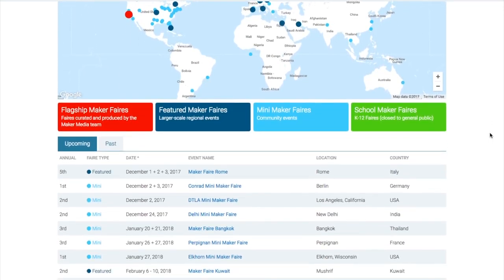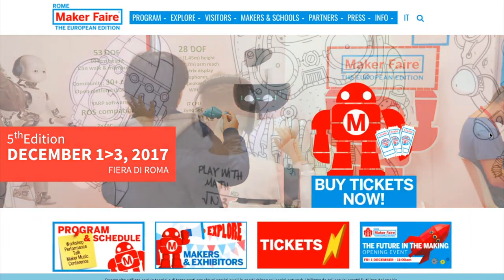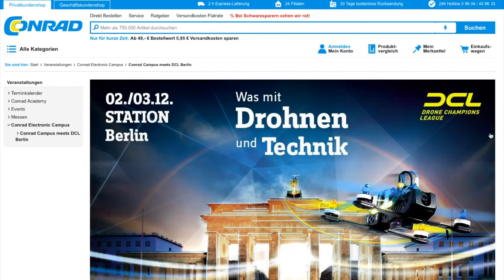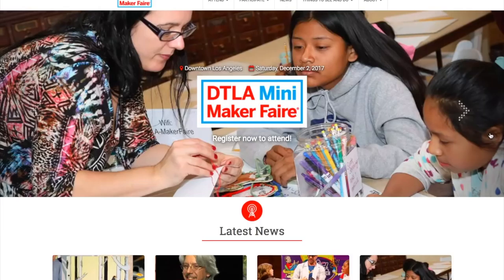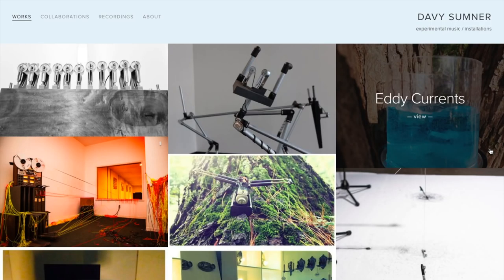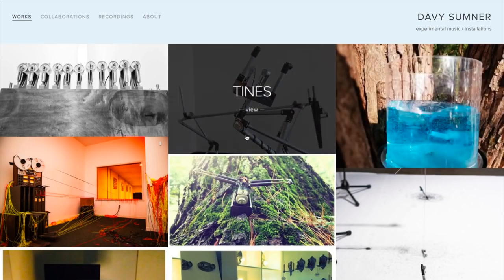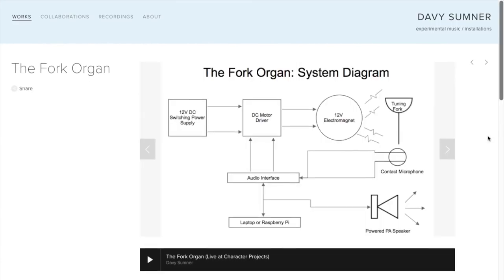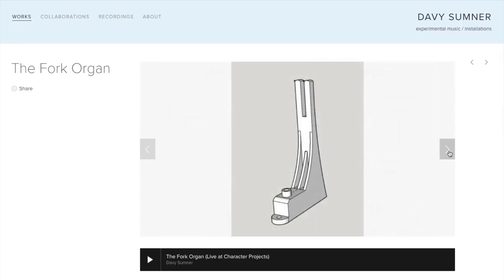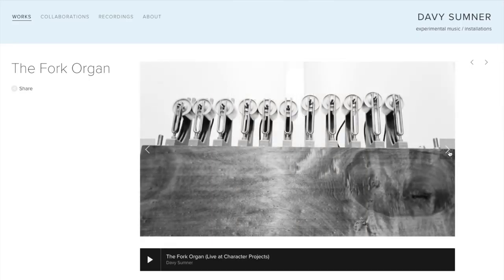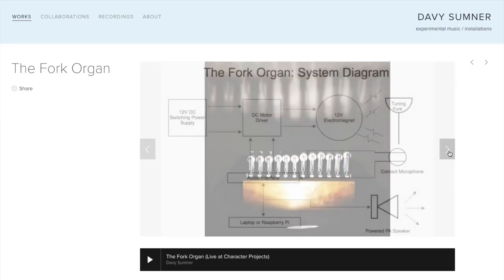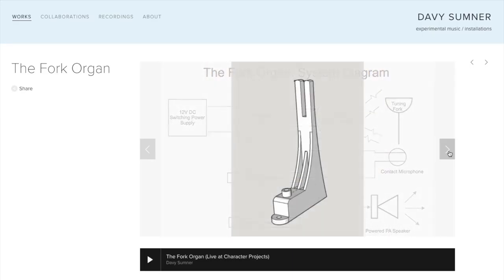Maker Faires! Only a few this weekend as the year winds down, but there's a big one in Rome, a mini one in Berlin, and one in Los Angeles. In fact, I got an email a few days back from maker and musician Davey Sumner, who's performing at the LA Maker Faire with his experimental fork organ that combines DC motors, tuning forks, and magnets. I encourage you to go check it out if you're in the area.